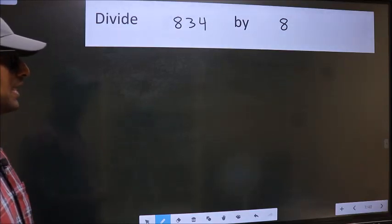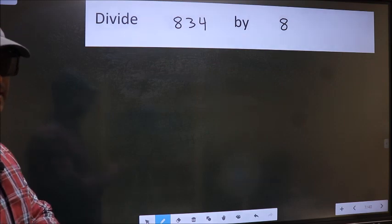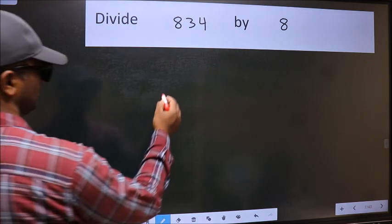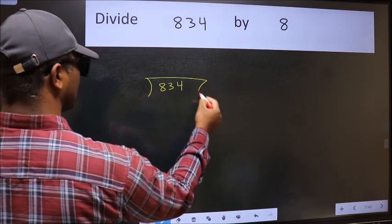Divide 834 by 8. To do this division, we should frame it in this way. 834 here and 8 here.